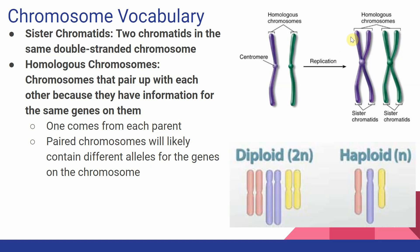To explain that a bit more: information on these homologous chromosomes could include the gene for eye color, the gene for hair color, and the gene for height. However, our purple chromosome could have a brown hair allele while our green chromosome has a blonde hair allele, or our purple chromosome could have a brown eye allele while the green chromosome could have a blue eye allele. So they have information for the same genes, but different alleles for those genes most of the time.